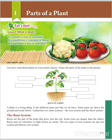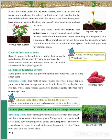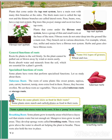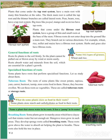Depending upon the life of the plant or tree, the plants develop their roots. Plants that come under the tap root system have many roots with the main thick root and thin branches at the side. The thick main root is called the tap root and the thinner branches are called lateral roots.